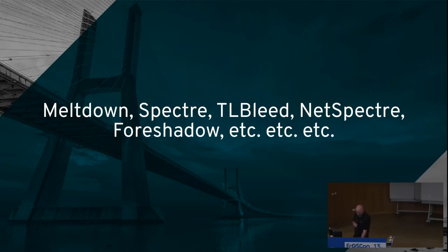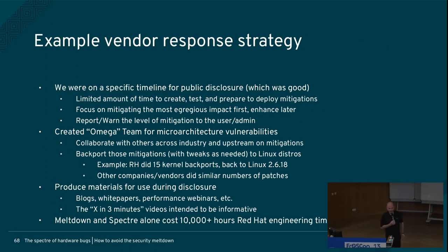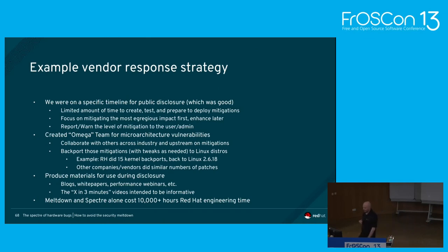What does that mean for the different kinds of vulnerability? Here's a list of vulnerabilities and we're going to go through them. First, a typical vendor response strategy: our job when dealing with these is to work out the mitigations — how to make them go away. We have a finite period of time to do this. We collaborate with many different companies under industry embargoes to work out what we need to do, get upstreams fixed, and get our vendor products fixed. Just dealing with Meltdown and Spectre took us 10,000 engineering hours.